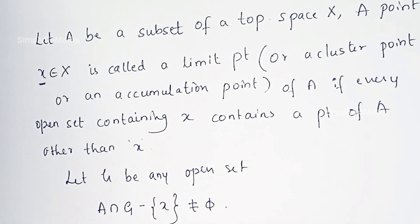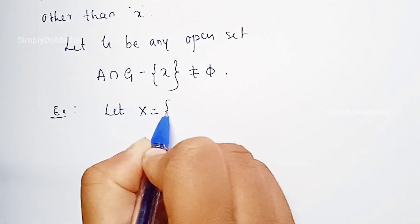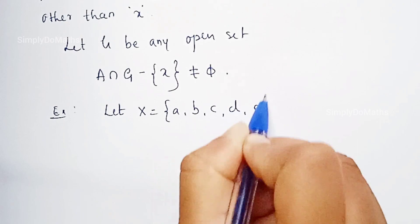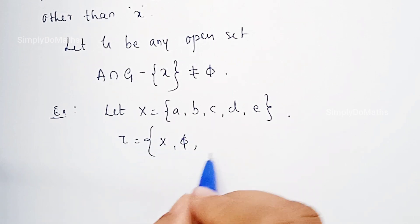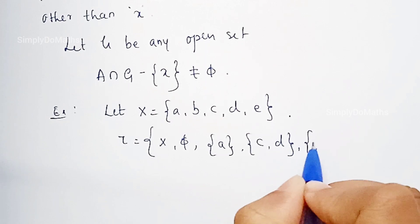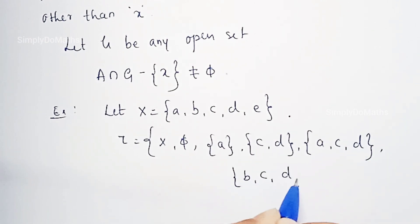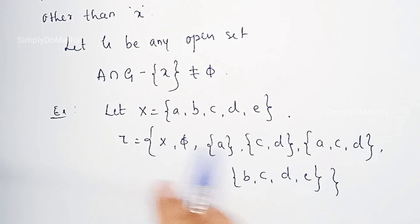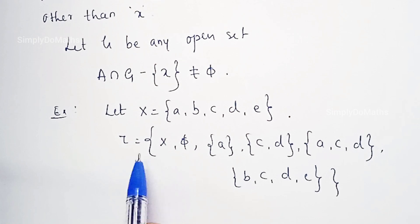Let us consider one example to understand the concept. Let capital X be a set containing five elements. Let us derive one topology. As we know, a topology contains X and empty set, singleton set {A}, the set containing two elements {C, D}, then {A, C, D}, and {B, C, D, E}. This tau satisfies all the conditions of a topological space, so tau is a topology on X.